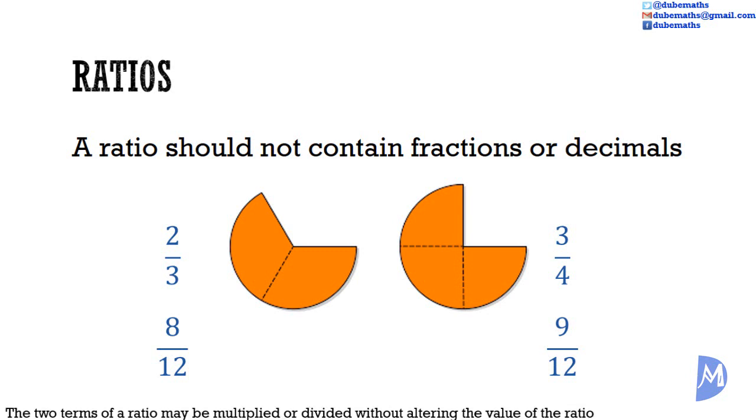Or, remembering that 2 terms may be multiplied without altering the value of the ratio, we can multiply both by 12. Multiplying both by 12 would give 8 for the left diagram and 9 for the right diagram. A ratio of 8 to 9.